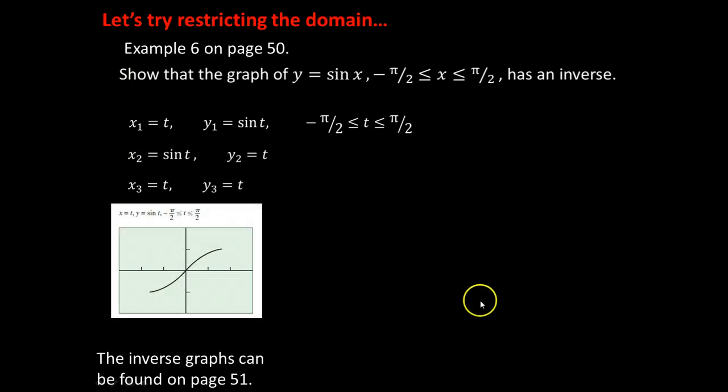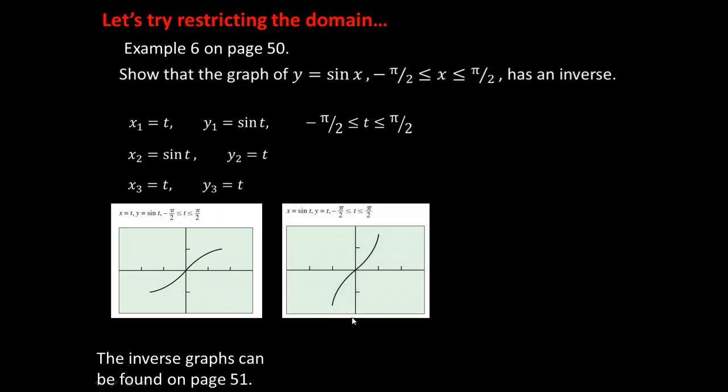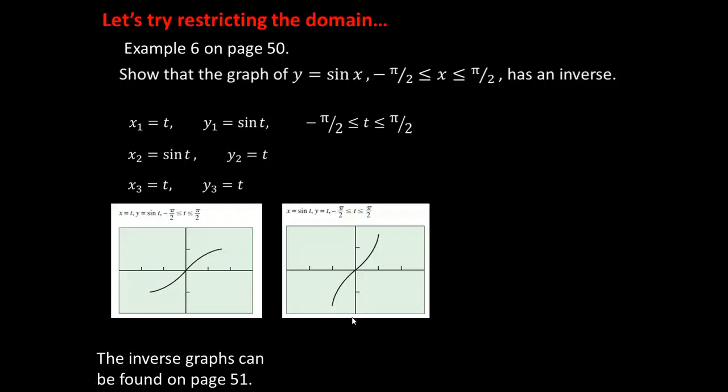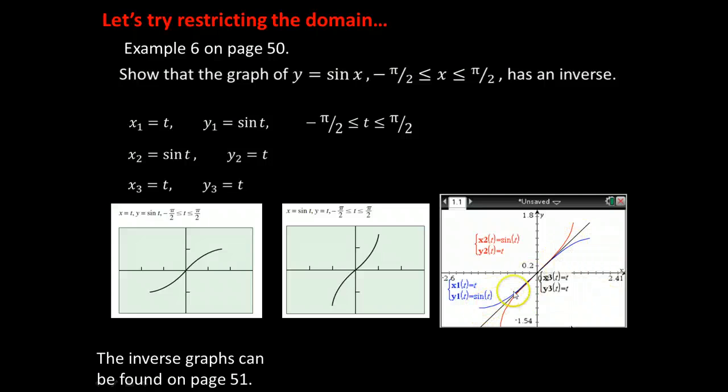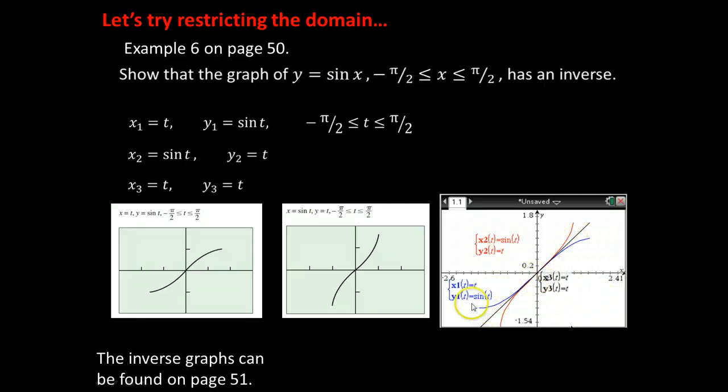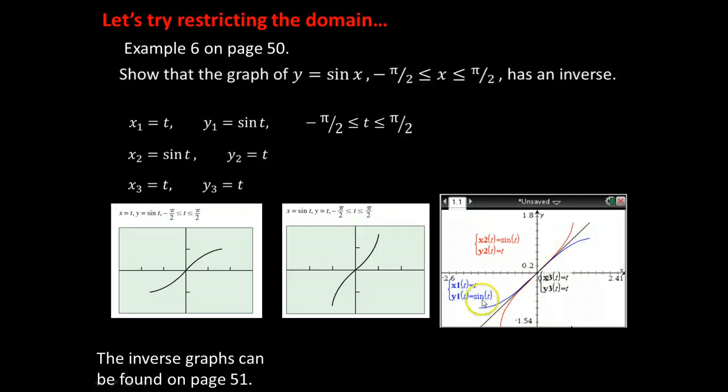So there's a graph of the original function when x = t and y = sin(t), from our domain of -π/2 to π/2. Next, we have the graph of the inverse when x is sin(t) and y = t. And then here we have a graph of both of them together with the line y = x. And we can see that yes, we do indeed have the inverse, because we have the mirror image across that line y = x.